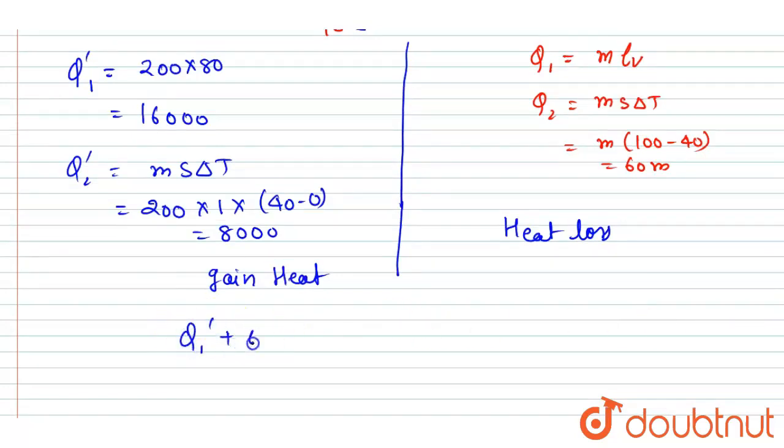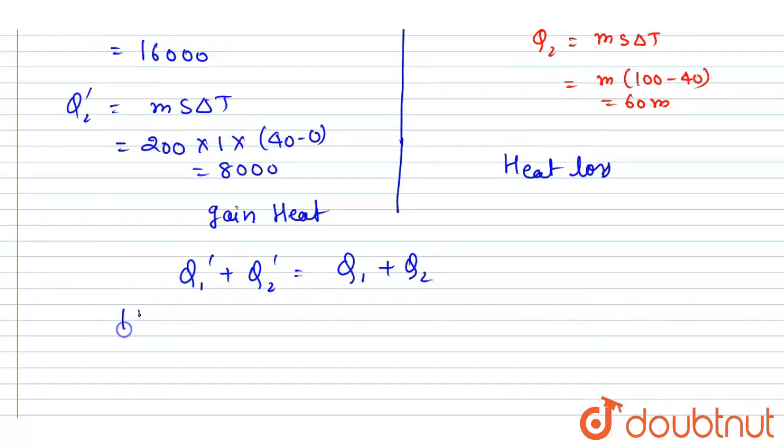So I will write Q₁' plus Q₂' equals Q₁ plus Q₂. This would be equal, so I will write 16,000 plus 8,000 equals.